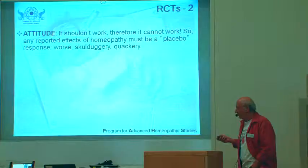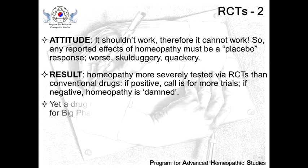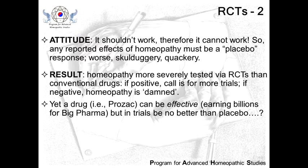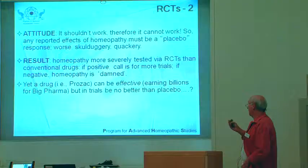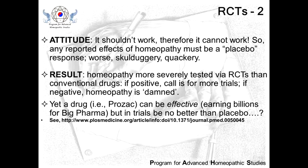The result is that homeopathy actually ends up getting more severely tested via randomised controlled trials than conventional drugs. If the trial comes out positive — and there are quite a few trials that show a positive effect — the call is for more trials. If the trial is negative, that damns homeopathy to perdition for infinity. And yet we have a drug like Prozac, which can be effective — it works for some people. But it's a drug that earns billions for big pharma, yet in trials it's been shown to be no better than placebo. So there's hypocrisy going on here.